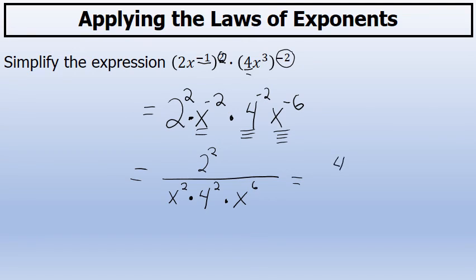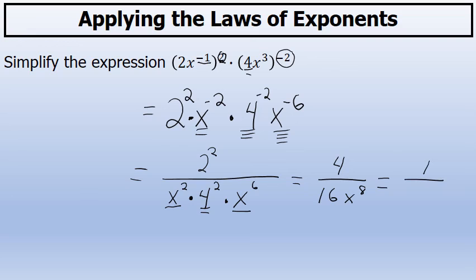2 to the 2nd power in the numerator is 4. In the denominator, 4 squared is 16, and I'll write that first. Then x to the 2nd times x to the 6th — when you multiply the same base you add the exponents — that becomes x to the 8th power. My final step will be to put this fraction in lowest terms: 4 over 16 in lowest terms is 1 over 4, so the simplified version of the original expression is 1 over 4x to the 8th power.